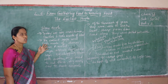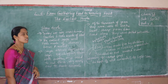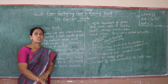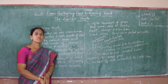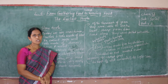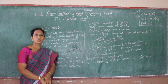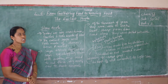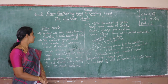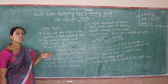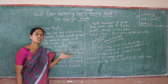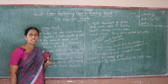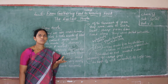Nowadays we use machines, tractors, and tools made of steel. But what did the earliest people use? They used tools made of stones. First they used stones, and later they also used bones of animals and wood.